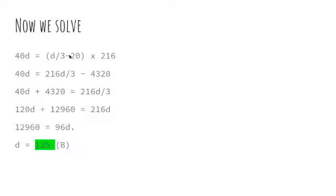Now, now we solve. 40d is equal to d divided by 3 minus 20 times 216. So we just filled in the blanks. Now, 40d is equal to 216d divided by 3 minus 4,310.